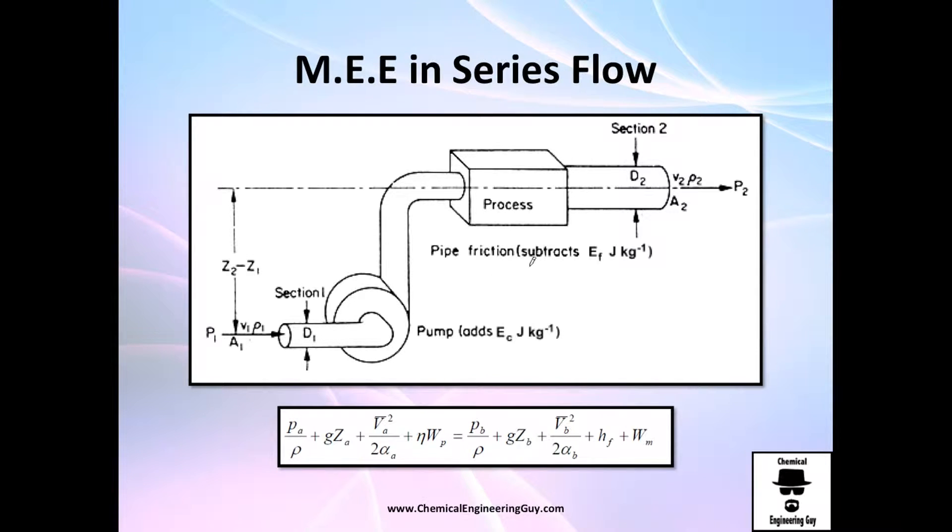Recall from the mechanical energy equation examples, we always were given an inlet point in which we got pressure, velocity, then we got either in a series of processes in which we either add energy or take out energy, or even the friction losses. And eventually you got to point number 2 in which you got another velocity, another pressure, and between point 1 and point 2 you always had a difference in heights.